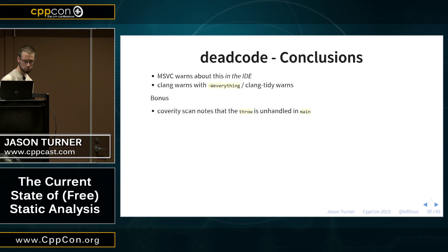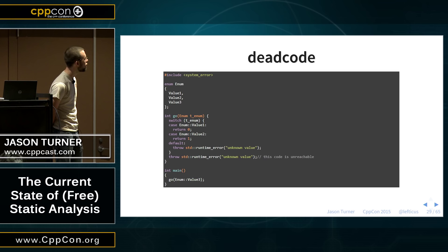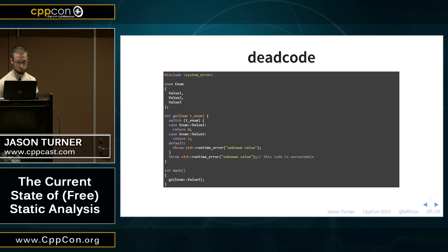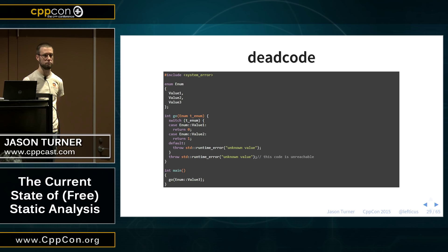As a bonus, Coverity tells us that in your main function you're calling this function called go that has a really good chance of throwing an exception and you're not doing anything about it. Part of me says we're not Java programmers — we don't feel like we need to catch every single exception that comes — but it's handy.